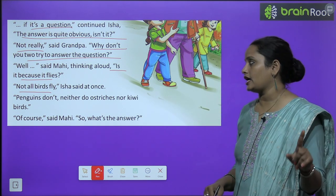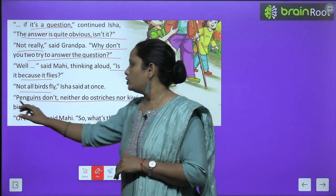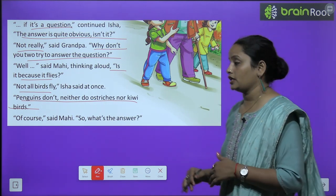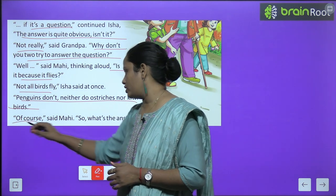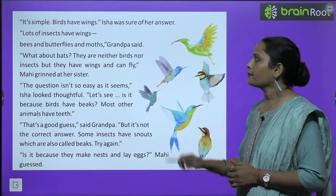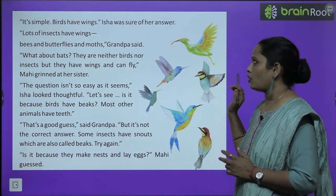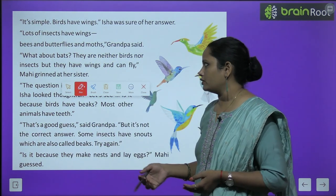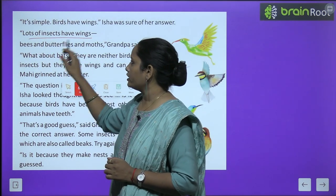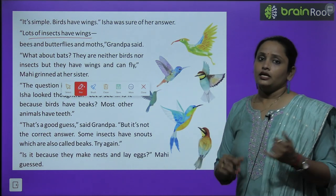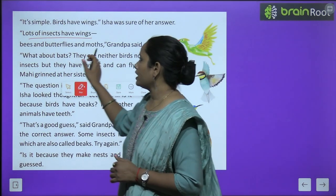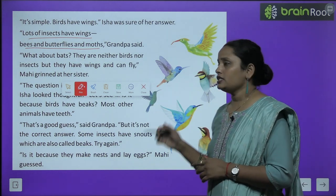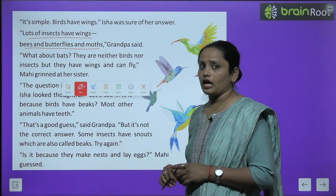Not all birds fly — सारी birds नहीं उड़ सकतीं। Penguins don't, neither do ostriches, nor kiwi birds. ना तो penguin उड़ सकती है, ना ostriches, ना kiwi birds। Mahi said — of course they are birds. It is simple, birds have wings — Isha was sure of her answer. तो Grandpa ने कहा: lots of insects have wings — bees and butterflies and moths — तो क्या ये भी birds कहलाएंगी?